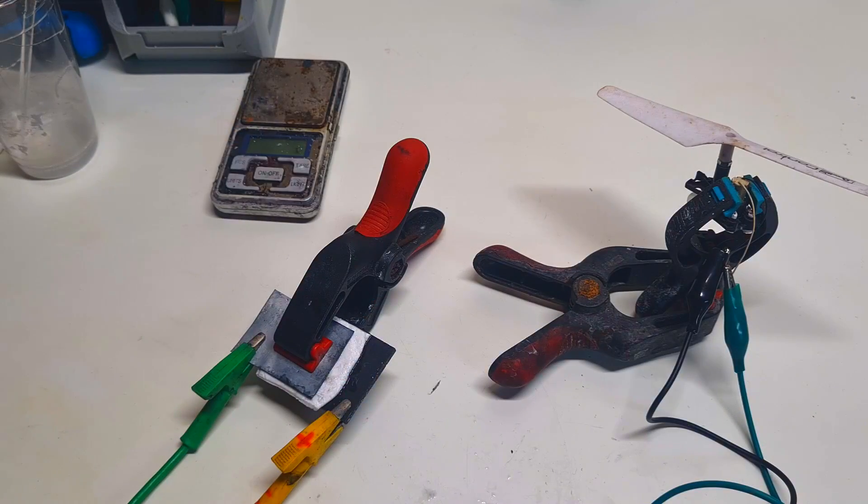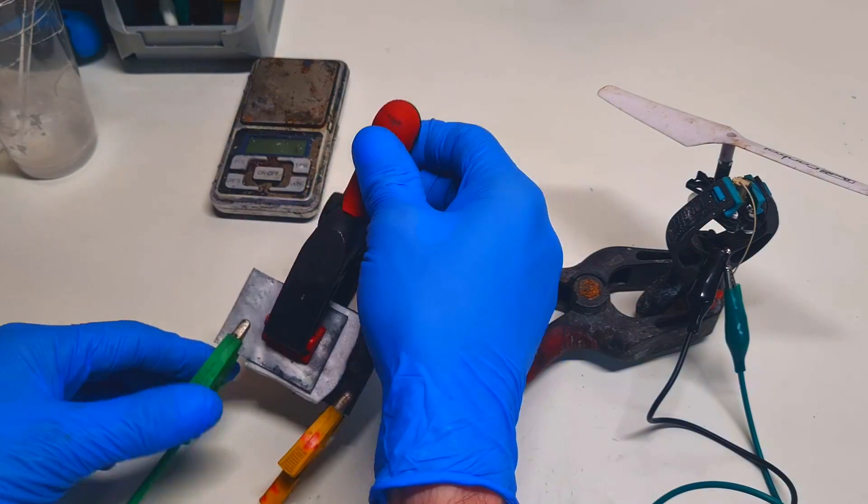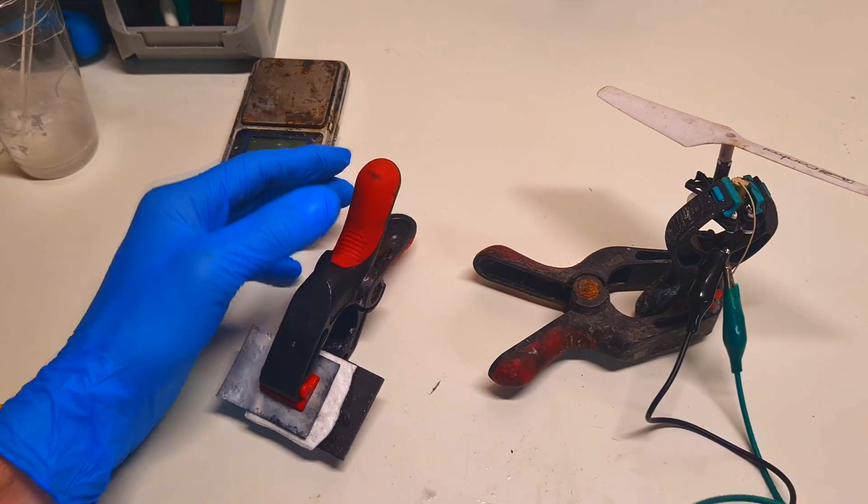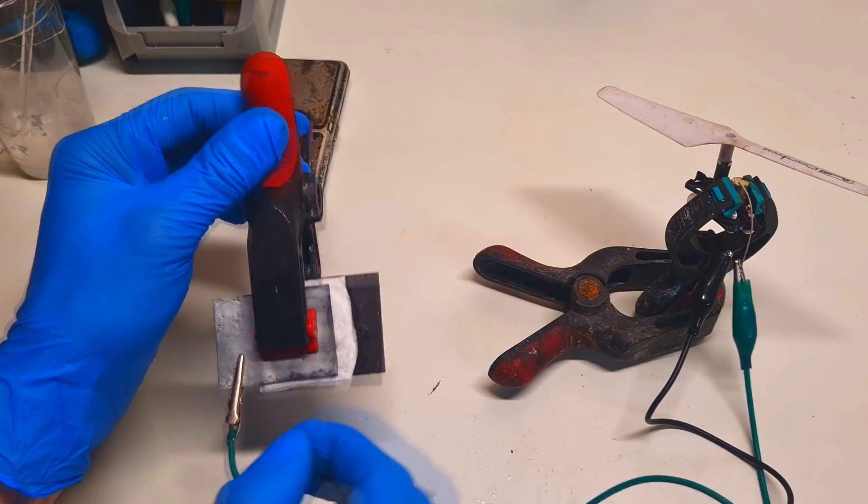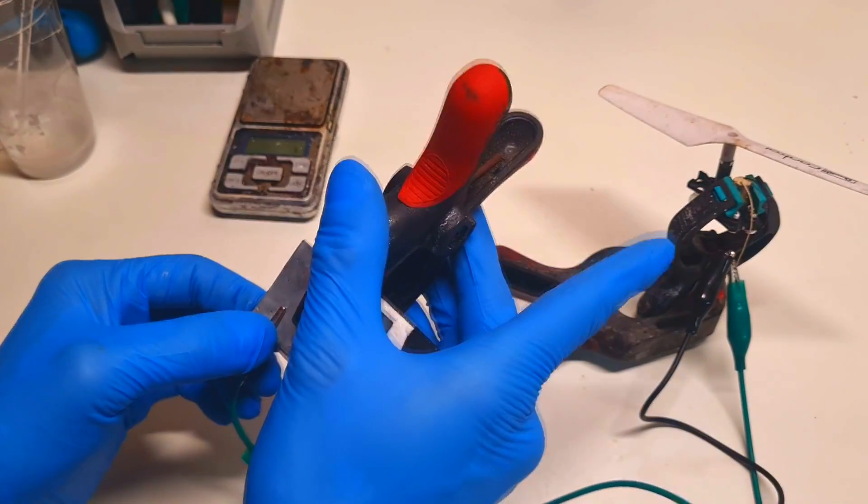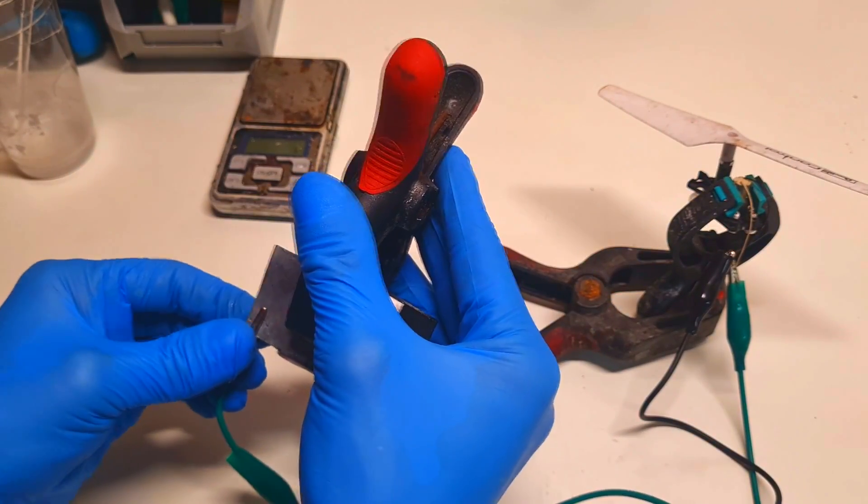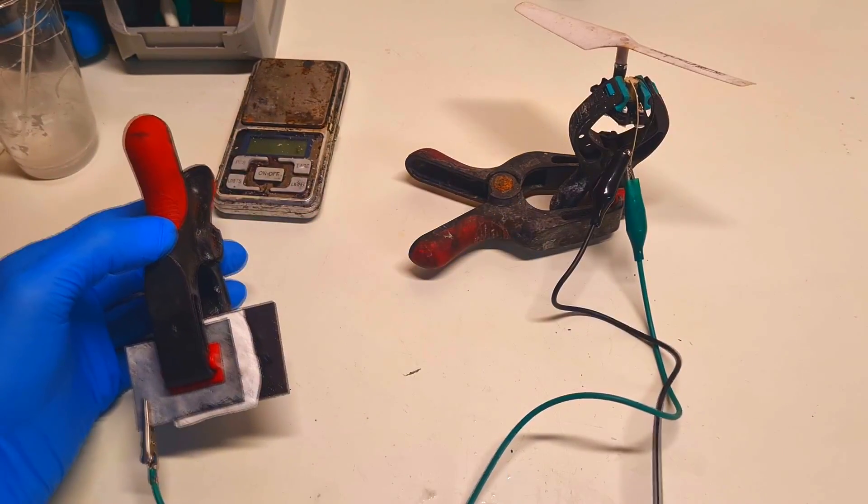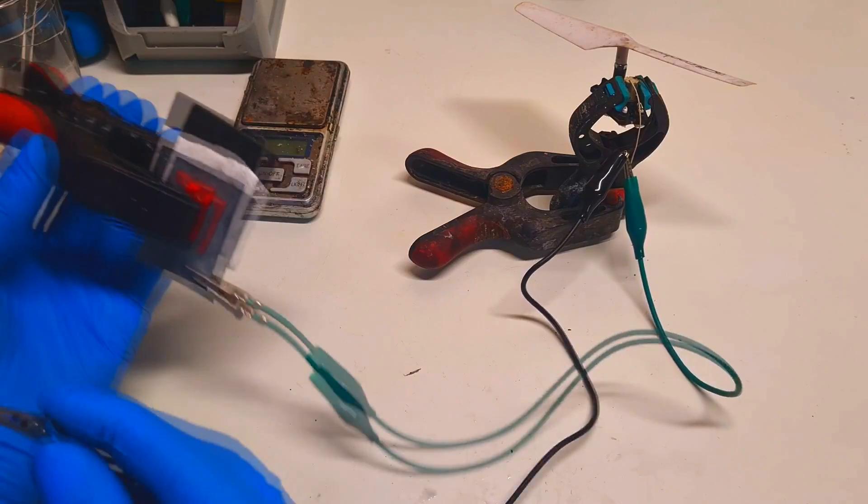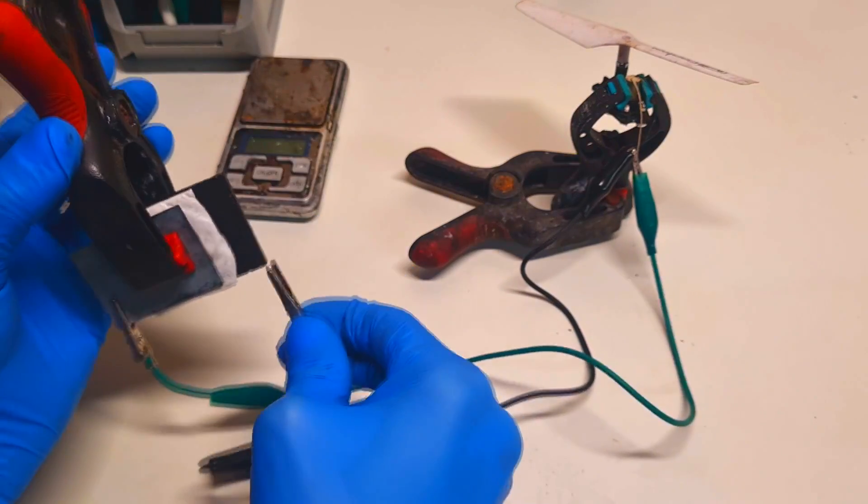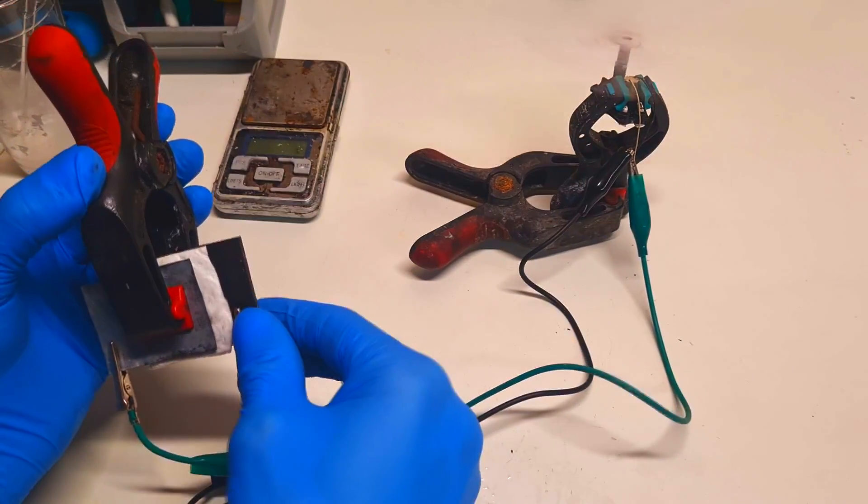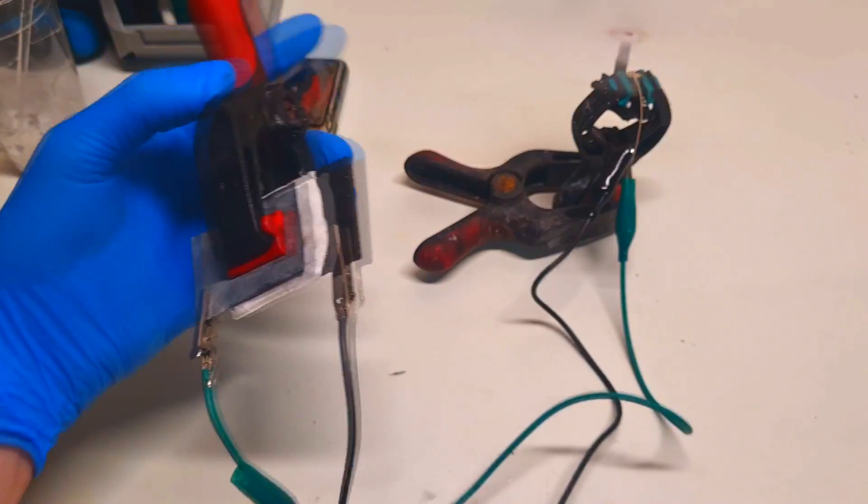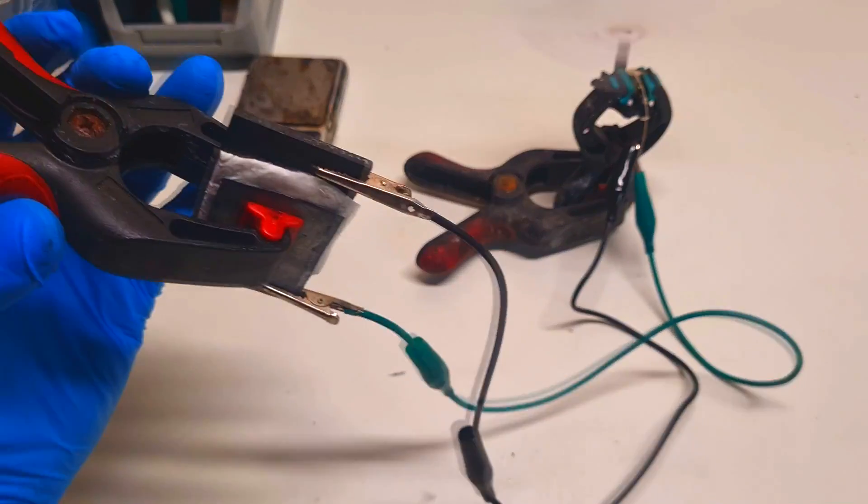Now that cell was charging for three minutes. I will just disconnect that cell from my power supply and I will see if this cell right now can run this drone motor. The cell doesn't have any problems to run this drone motor.